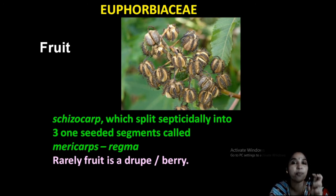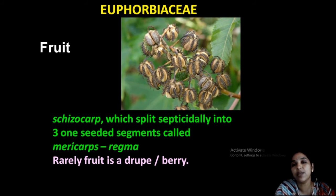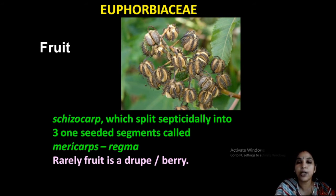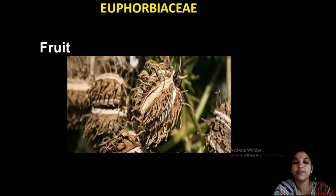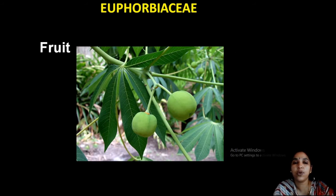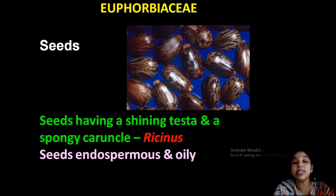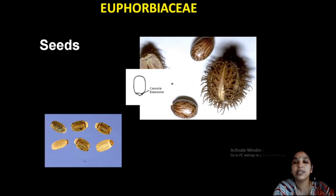The fruit regma is usually asked in practical examinations. The fruit of Ricinus is regma — the mericarps are the split portions. Sometimes the fruit is a drupe or a berry. You can see a tricarpellary fruit in the picture. Seeds have a shining testa and a spongy caruncle. Seeds are endospermic and oily.